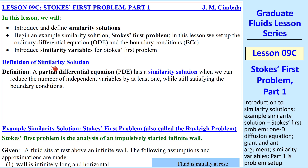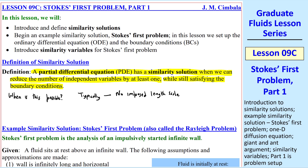First, what is a similarity solution? A partial differential equation has a similarity solution when we can reduce the number of independent variables by at least one while still satisfying the boundary conditions. This is typically possible when there's no imposed length scale in the problem and/or no imposed time scale in the problem.